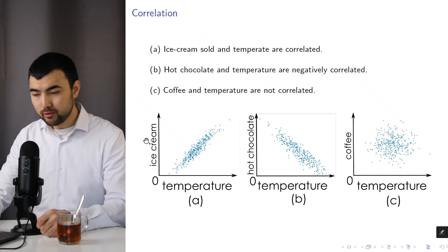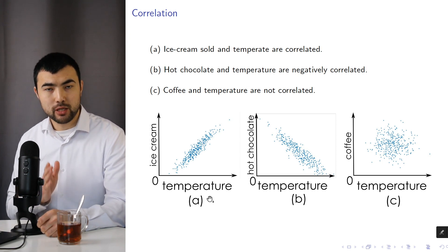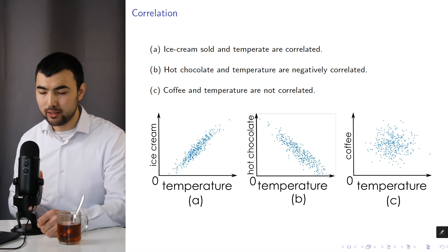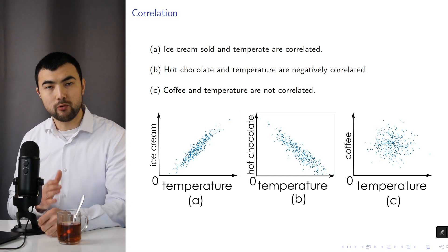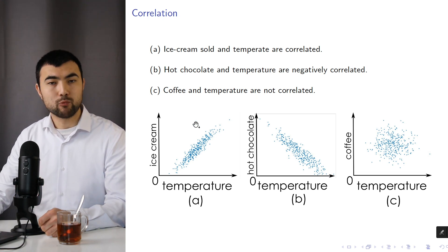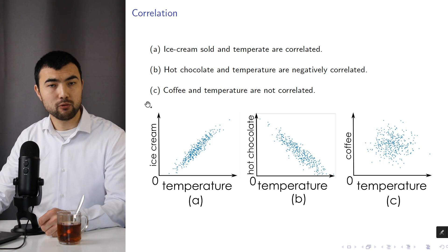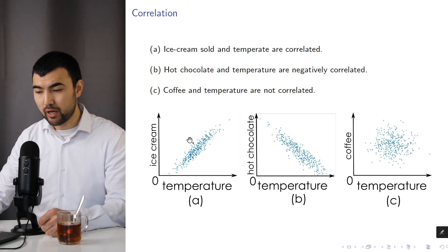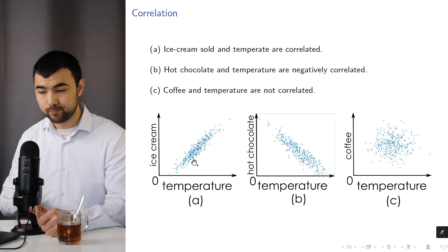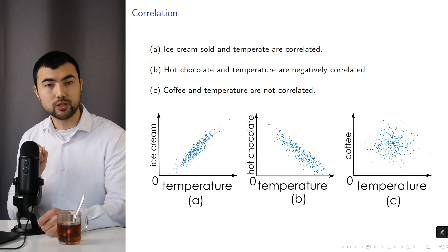Let's consider a simple example. Imagine that we measure temperature each day for one year, and also measure the quantity of ice cream sold every day. We end up with a plot where the x-axis has temperature, the y-axis has the quantity of ice cream, and we have 365 dots — each dot representing the temperature and ice cream quantity for one day.